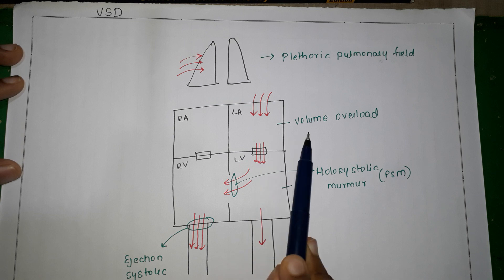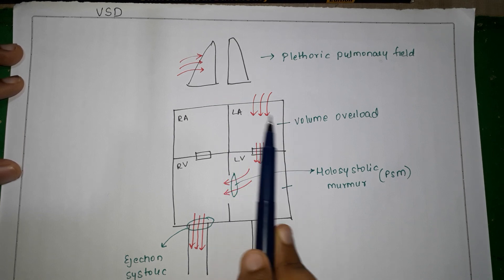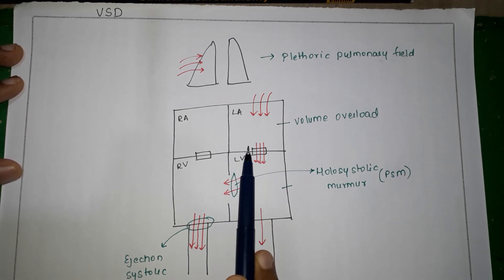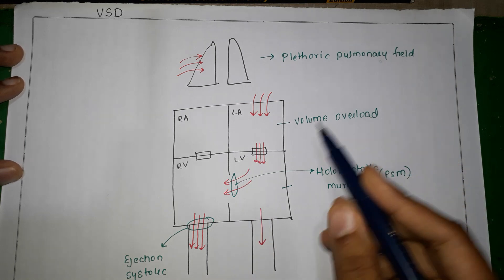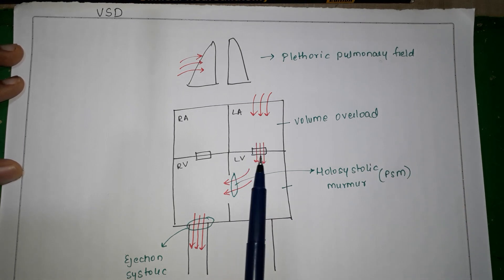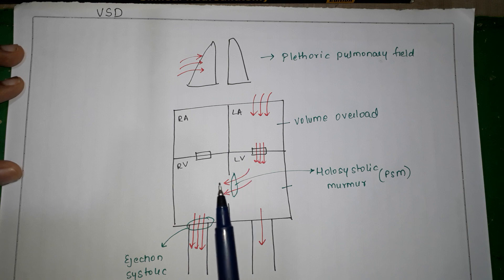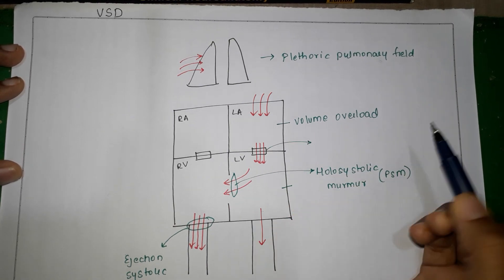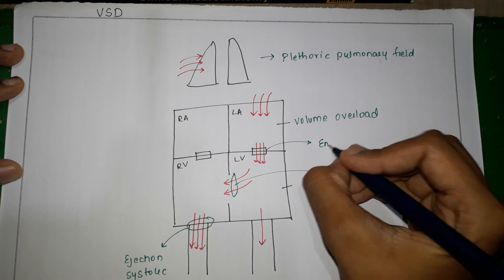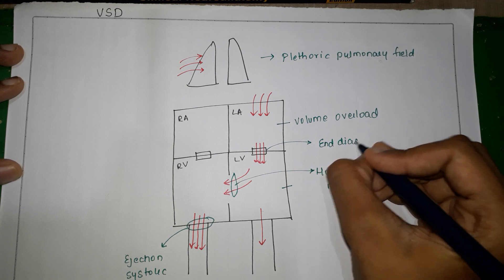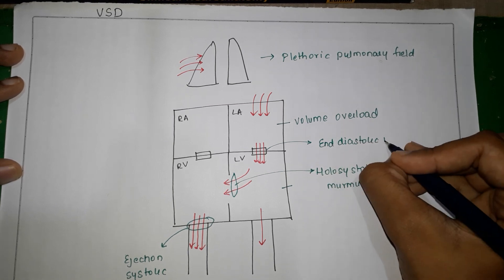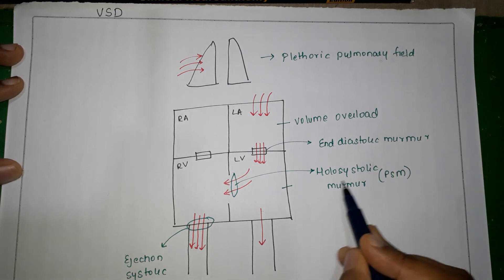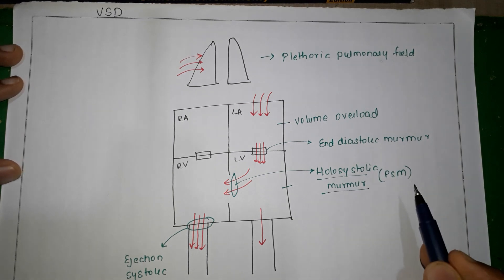With volume overload, the left atrium accommodates a large volume of blood which then passes through the small mitral valve. A large volume of blood passing through a smaller valve creates turbulence, causing an end-diastolic murmur. However, again this murmur is not appreciated because the holosystolic murmur is quite loud and masks it.